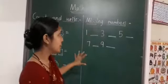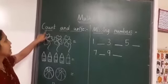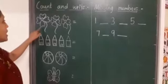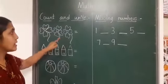Now, look at the board carefully. First one activity is count and write. Okay children, see here. How many flowers are there? We will count. Okay?